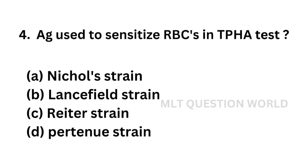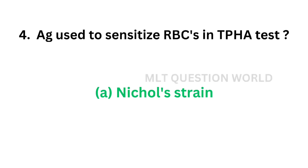Question number 4. Antigen used to sensitize RBCs in treponemal hemagglutination test: Option A, Nichol strain; Option B, Lansfield strain; Option C, Ritter strain; Option D, pertinent strain. The correct answer is Option A, Nichol strain. Antigen used to sensitize RBCs in treponemal hemagglutination test is Nichol strain, that is a strain of treponema.